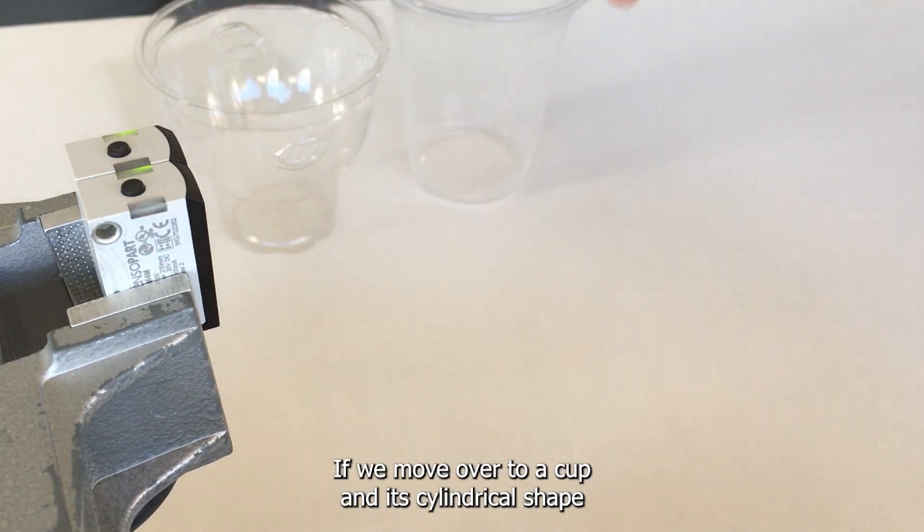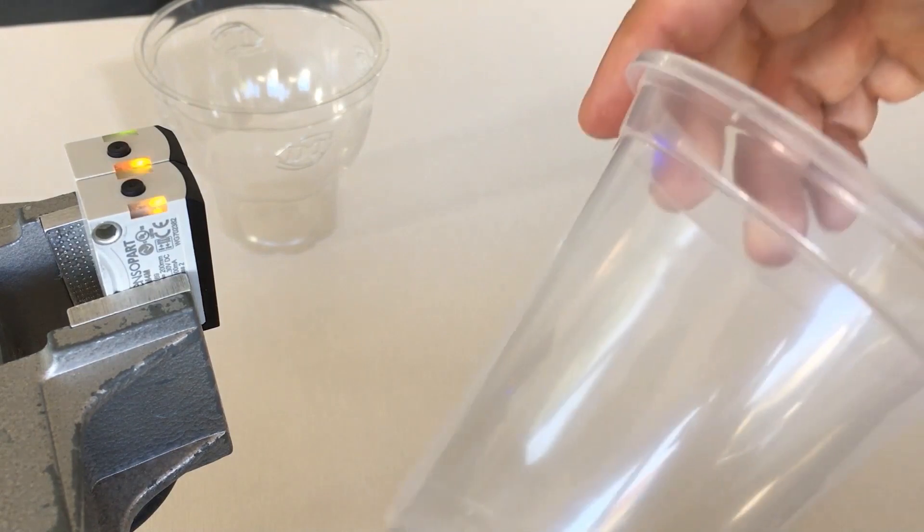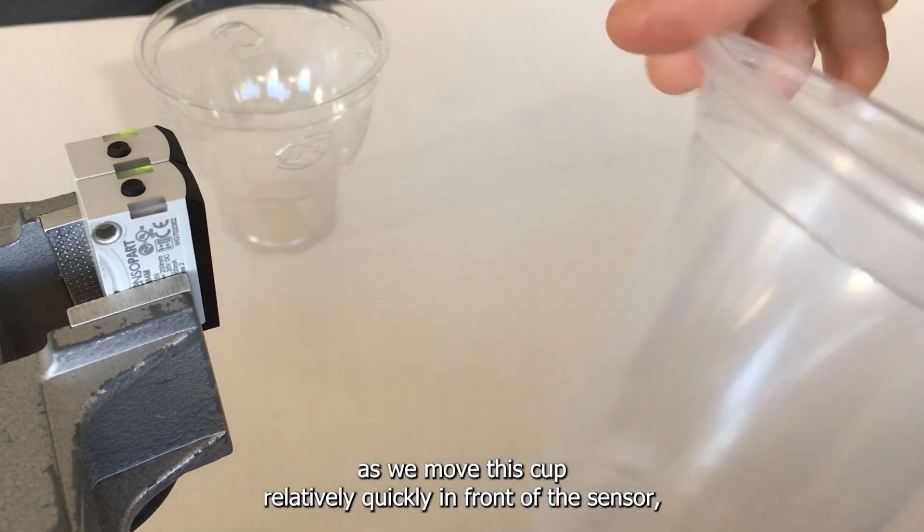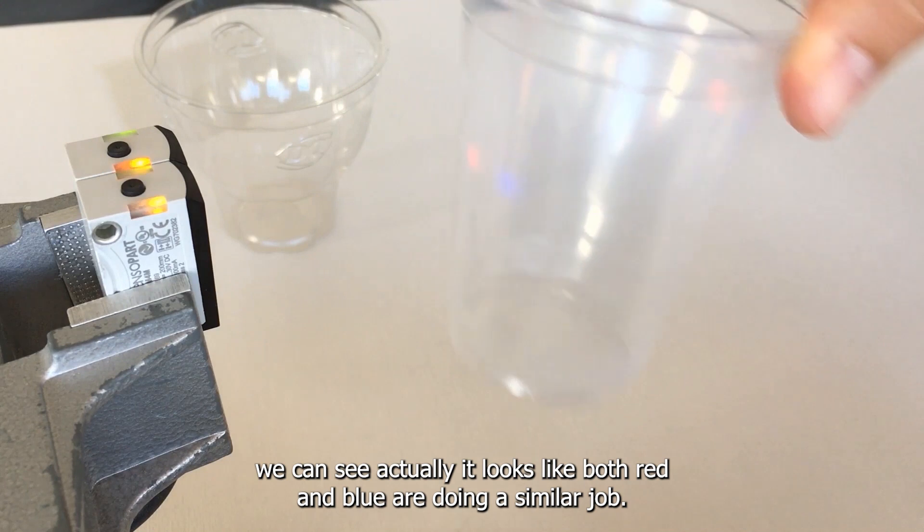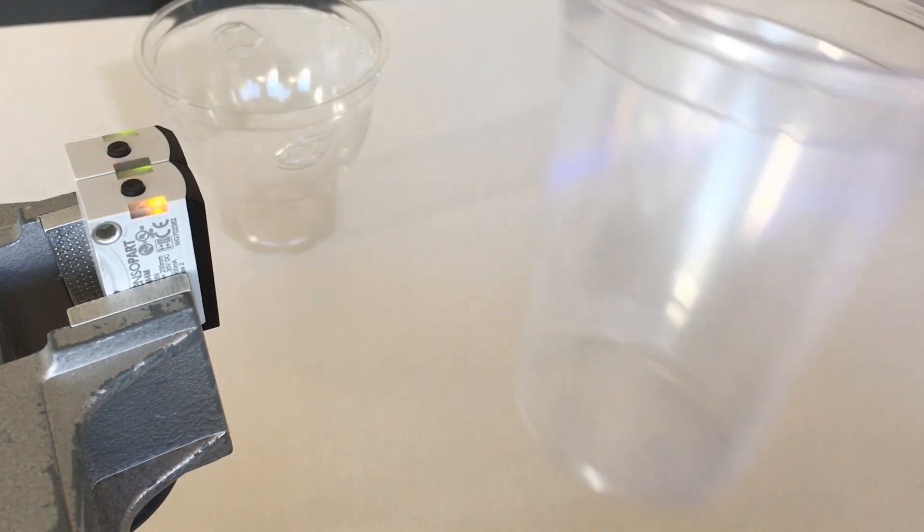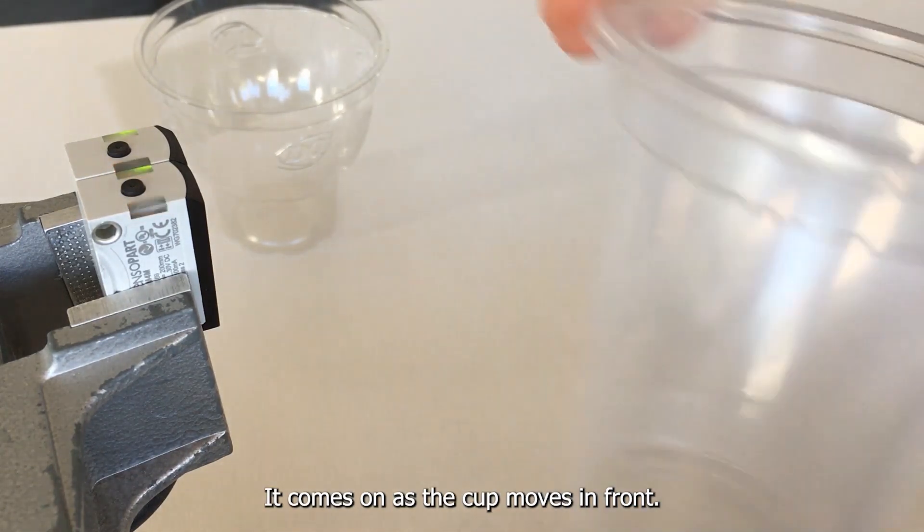If we move over to a cup and its cylindrical shape, as we move this cup relatively quickly in front of the sensor we can see actually it looks like both red and blue are doing a similar job - a single trigger as the cup moves in front.